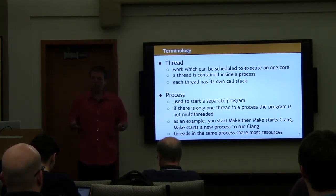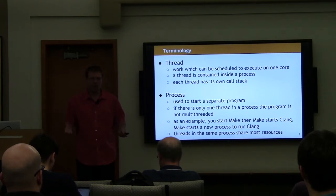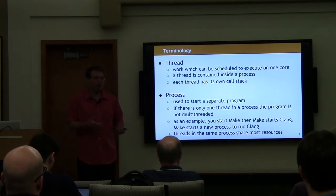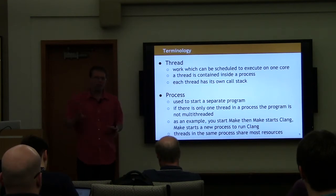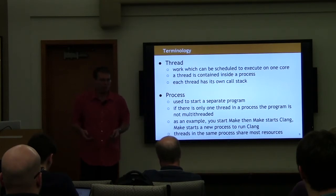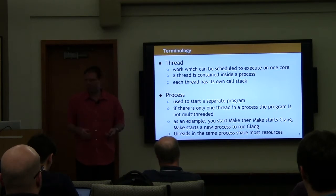Most of you will be familiar with processes starting other processes from working with things like make. When make is invoked, it starts clang to compile one of your object files as a separate process. This makes sense because processes don't share most resources — you don't want any code inside clang to be modifying the data structures inside make. But in threading, we do have a lot of communication between the different threads.